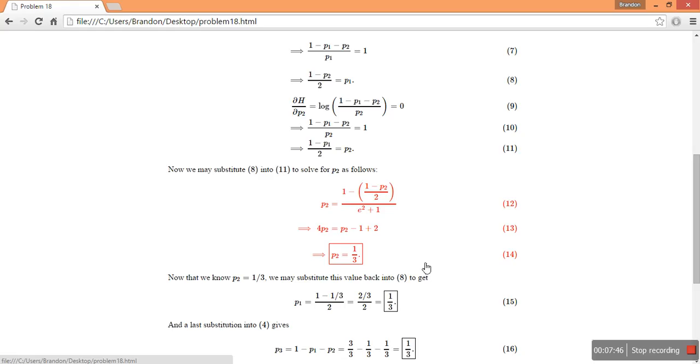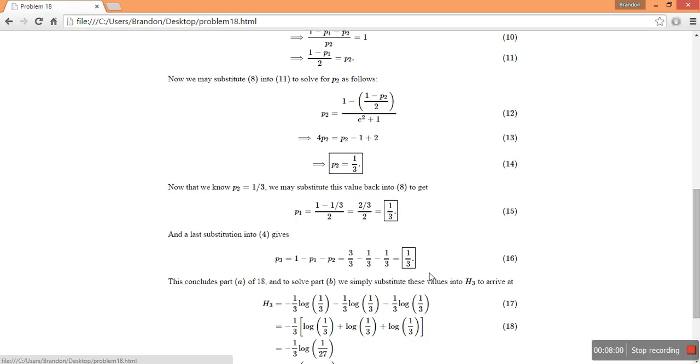So we find, after substituting 8 into 11 up here, from up here, that p sub 2 is equal to 1 third. And then, substituting this p sub 2 back in, we also find that p sub 1 is equal to 1 third.